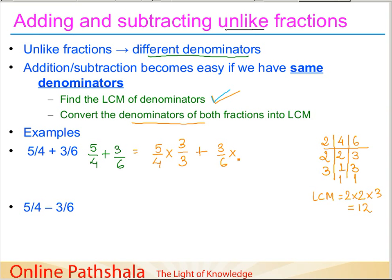For the second fraction three by six, we multiply six by two to get twelve in the denominator, and similarly multiply the numerator three by two as well. Simplifying: five times three is fifteen, so the numerator is fifteen and the denominator is twelve. Three times two is six, and six times two is twelve. We have now converted five by four and three by six into like fractions. We can simply add the numerators: fifteen plus six gives twenty-one by twelve.